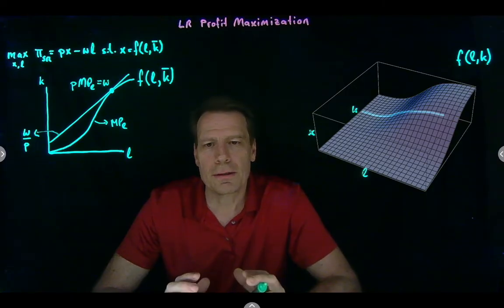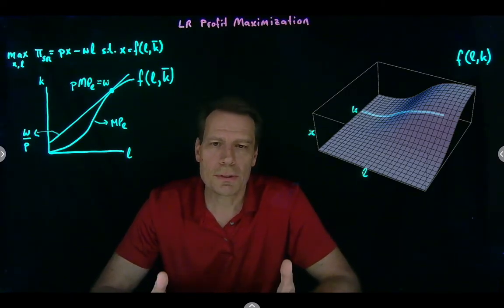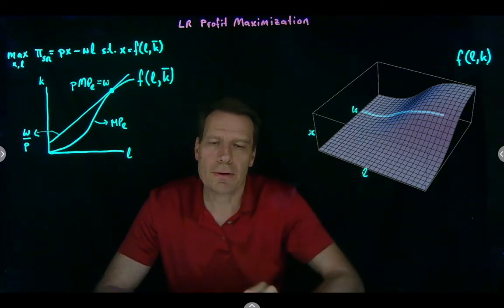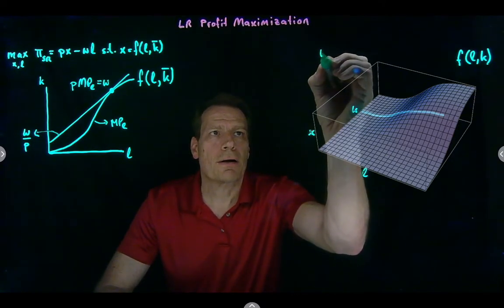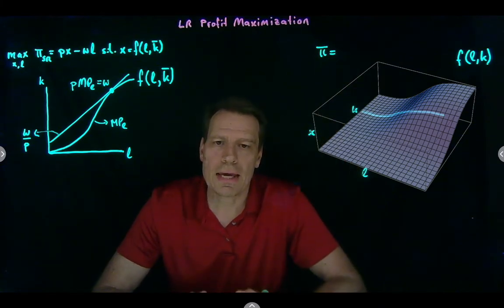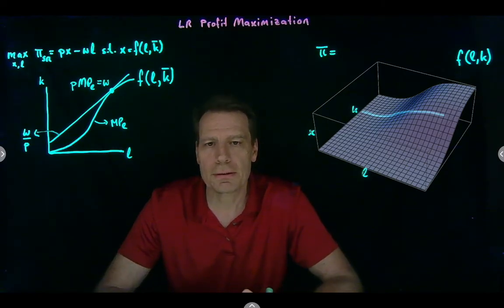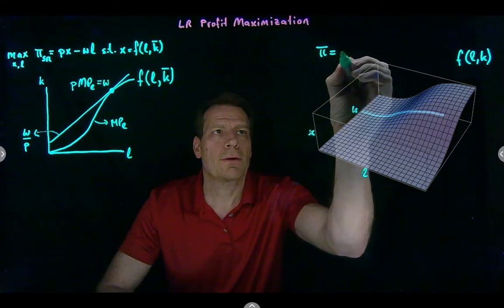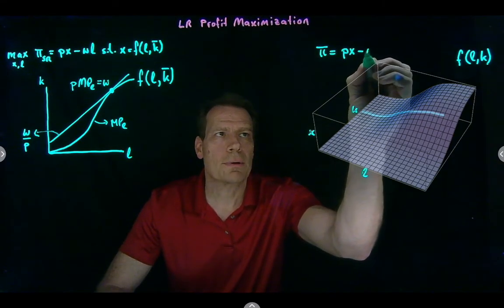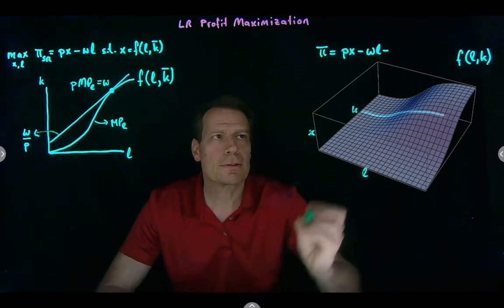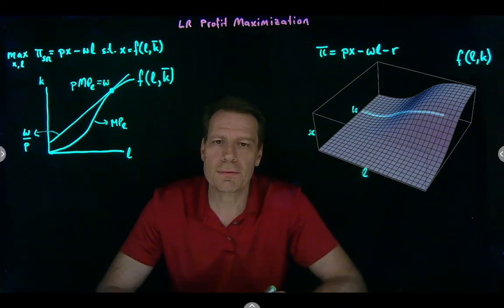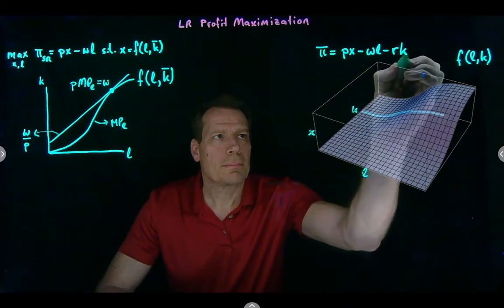We're now going to do the same thing in the long run and provide some intuition for what the profit maximizing conditions are when both labor and capital can be varied by the firm. Now the firm will maximize profit where both the labor costs and the capital costs are true economic costs, because both can be changed — neither is fixed.